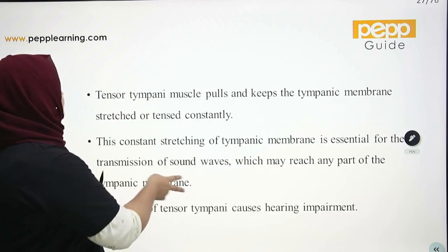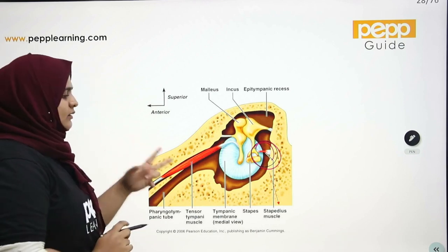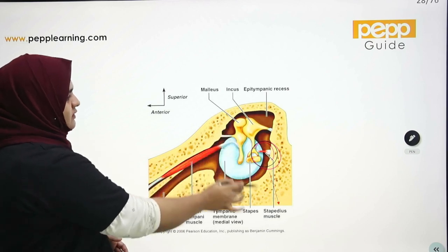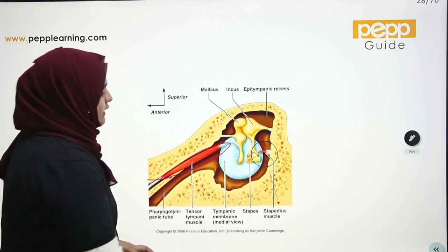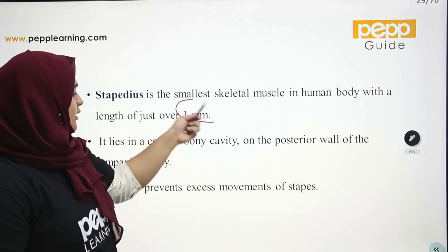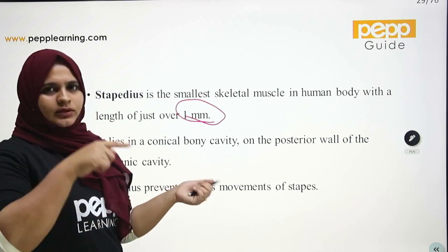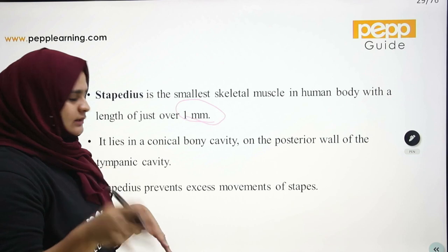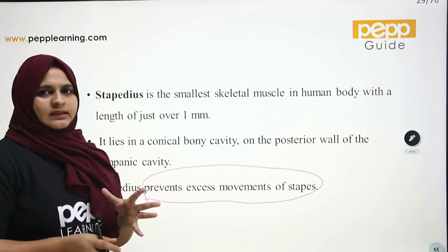The stapedius muscle is the smallest skeletal muscle in the human body, with a length of just over 1 mm. It lies in a conical bony cavity on the posterior wall of the tympanic cavity. The stapedius prevents excess movement of the stapes.